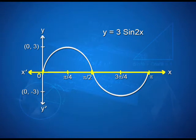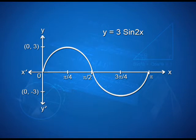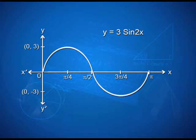We can see that x'Ox is the x-axis and yOy' is the y-axis. The graph is an increasing function; it goes from 0 to 3, then decreases and reaches pi/2, and in a similar manner we complete it till pi. This is the graph of y = 3 sine 2x.